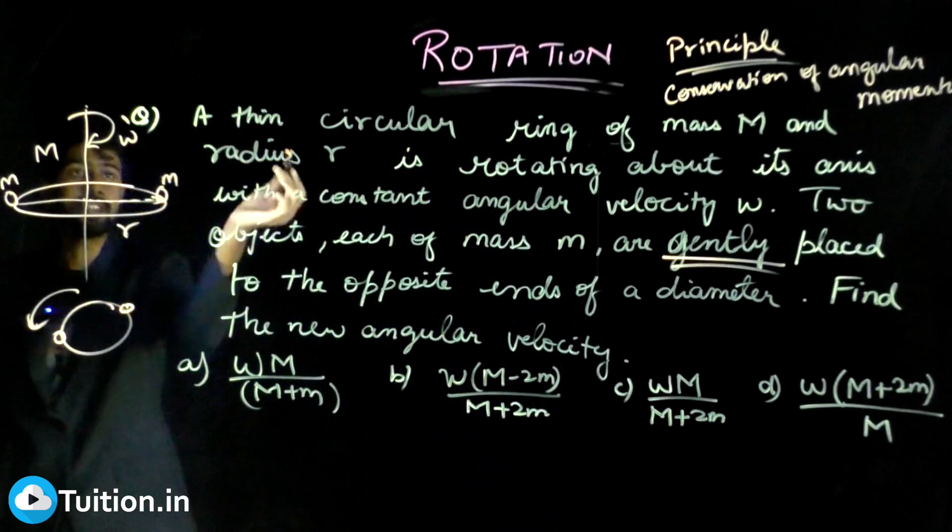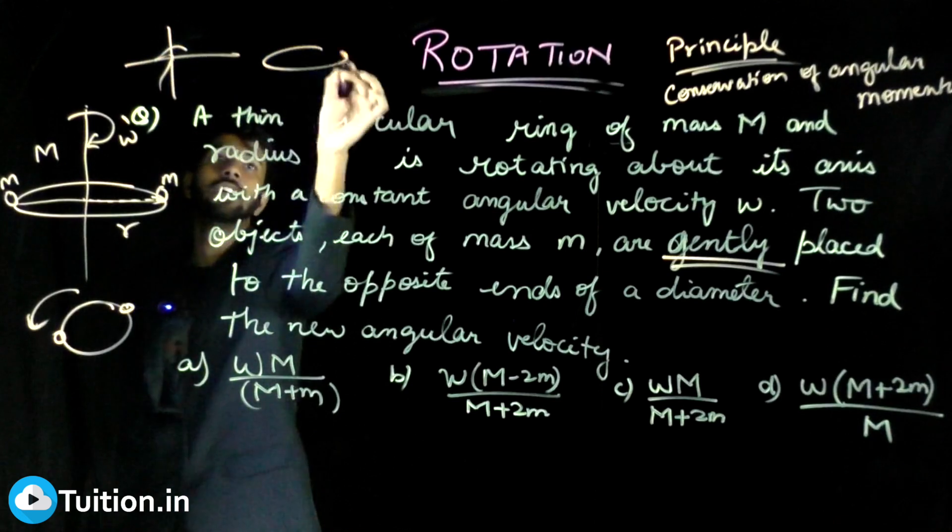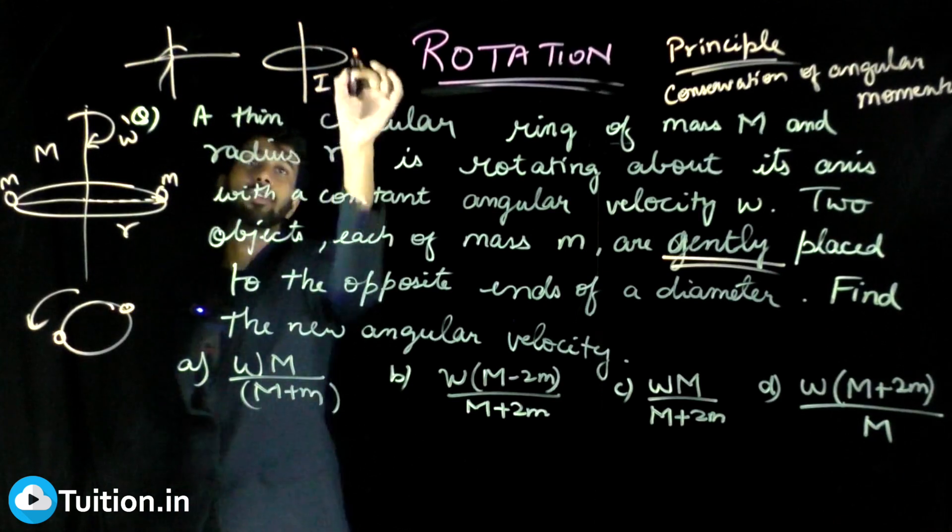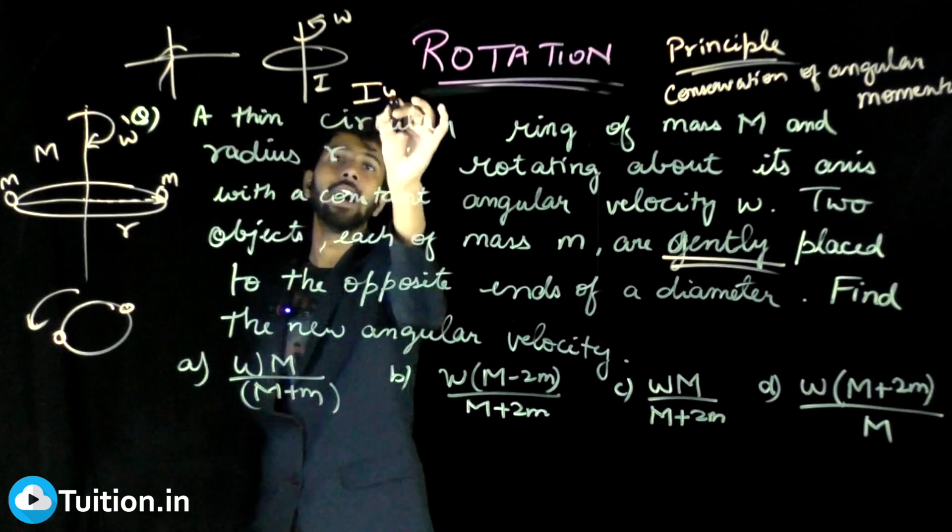Let I be the moment of inertia. What is the angular momentum? If the ring which has a moment of inertia I is rotating with an angular velocity of omega, what is the angular momentum? I omega.